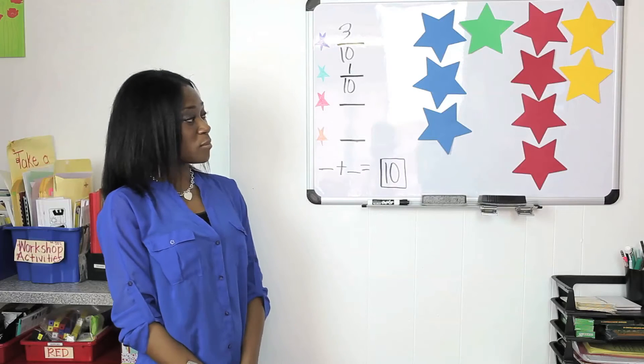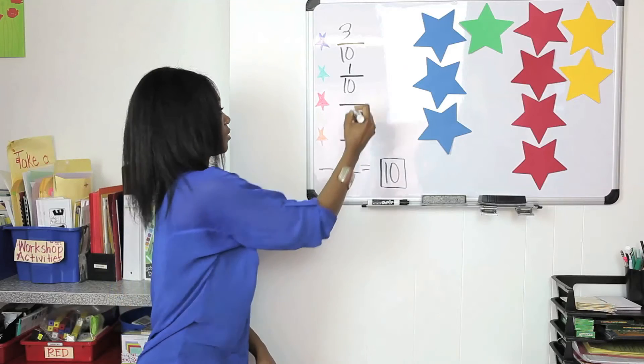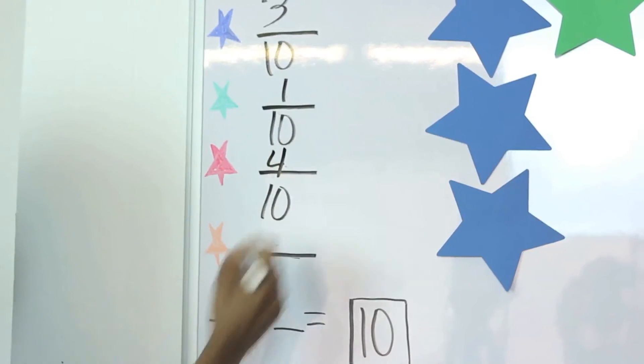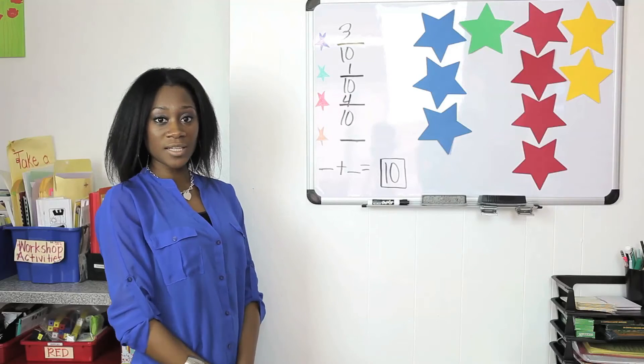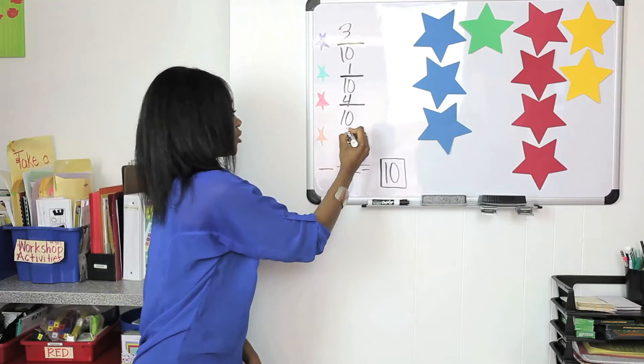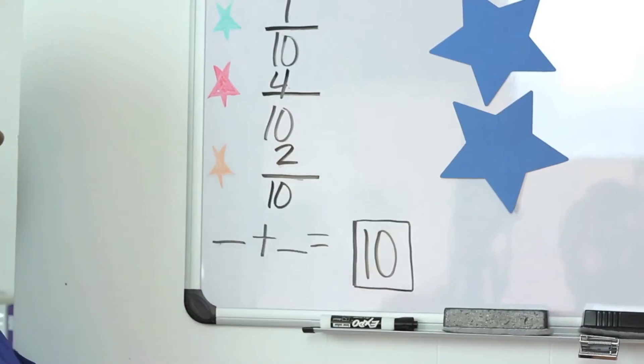Next you're going to ask them how many red stars. Four tenths. And last but not least, how many yellow stars do they see? And they should tell you two tenths.